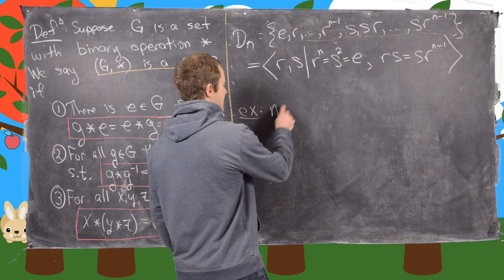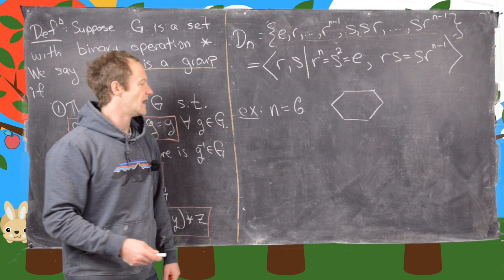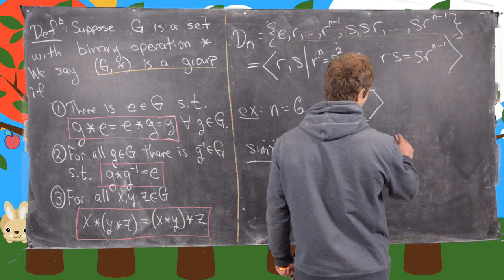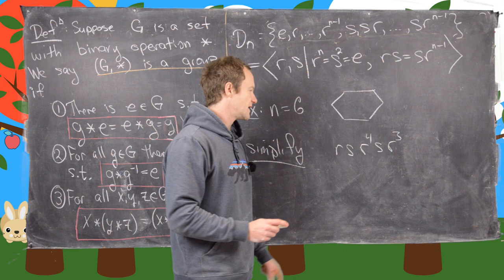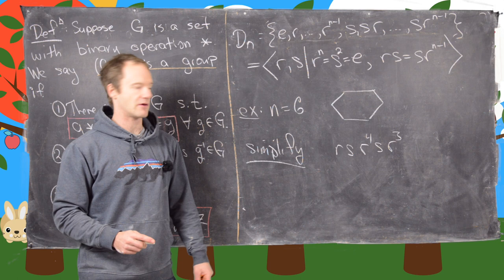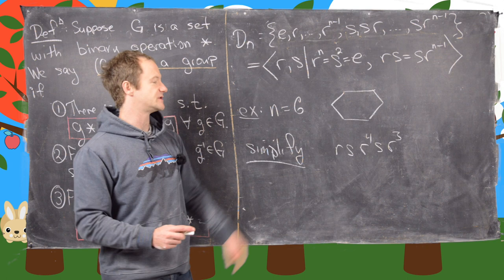Let's do an example calculation in a dihedral group. Let n equal 6, so we are looking at symmetries of a regular hexagon. Let's simplify r·s·r to the 4th·s·r cubed. Going from right to left: we do three rotations, a reflection, four rotations, a reflection, and a rotation — and we should be able to simplify this down to one of our standard elements.